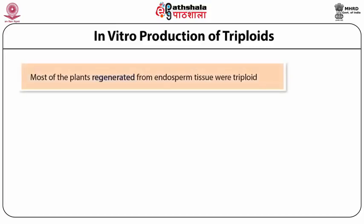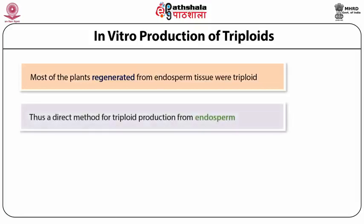Most of the plants regenerated from endosperm tissue are triploid. This is interesting. Thus, it offers a direct method for triploid production. The conventional method is very cumbersome and lengthy, where you have to produce a tetraploid, the tetraploid must be crossed with diploids, and there are more problems at every step. But here is a method where you can regenerate triploids directly from the endosperm cells.